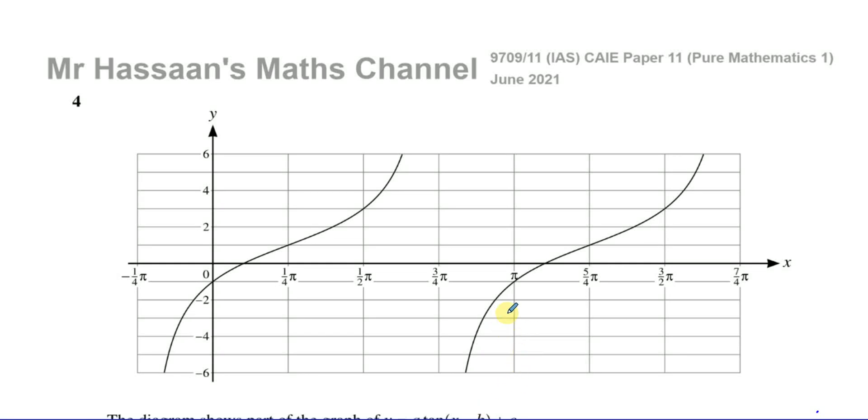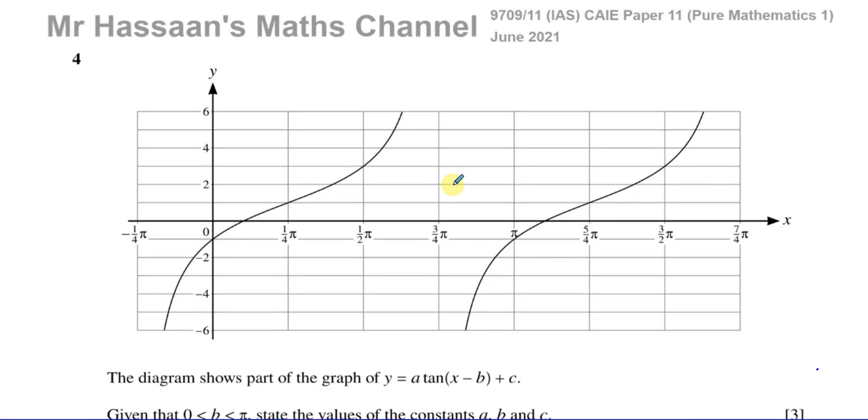Okay, welcome back. This is Mr. Hassaan's Maths Channel. I'm now answering question number four from the June 2021 International A-Level paper from Cambridge 9709. This is paper one, variant one, pure mathematics.